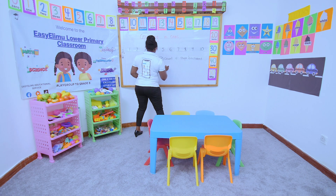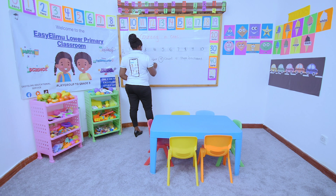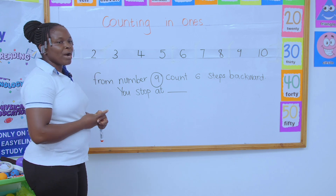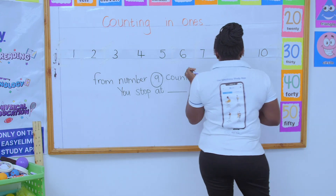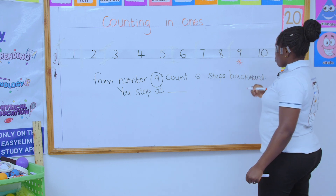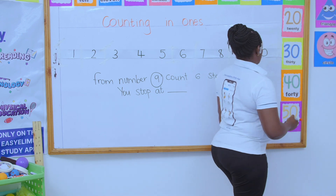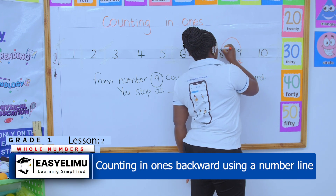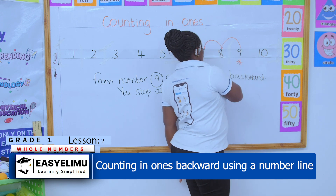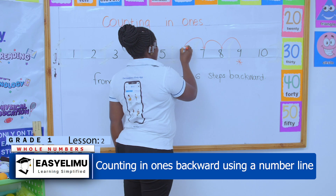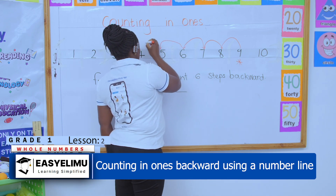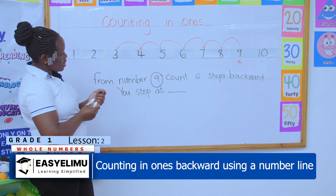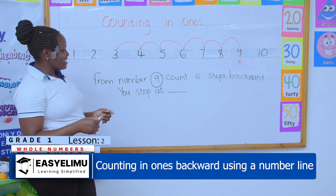We are counting in ones but now in the backward direction. I will put a mark on my starting number, which is nine. Starting at nine: one step, two steps, three steps, four, five, six. So from nine, count six steps backward — where did I stop?